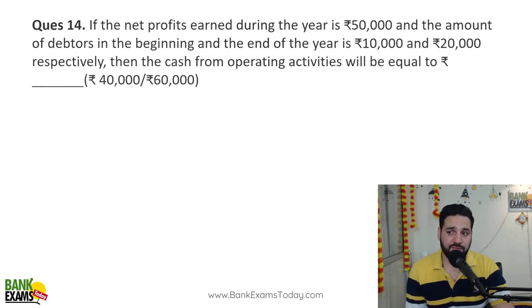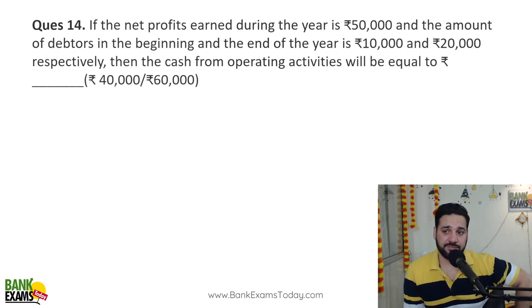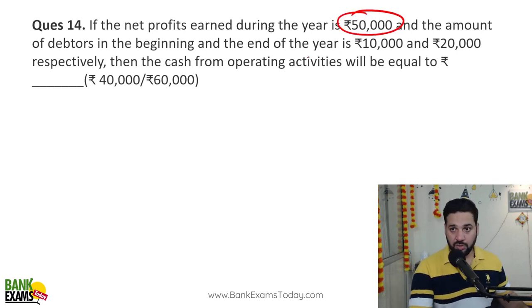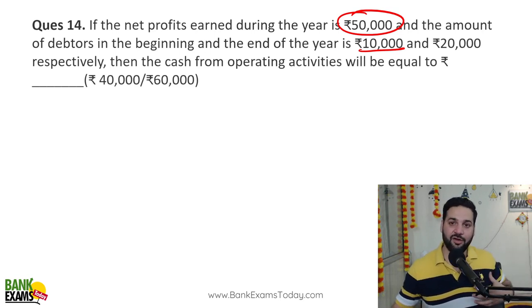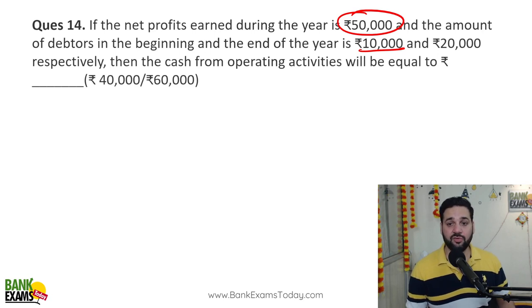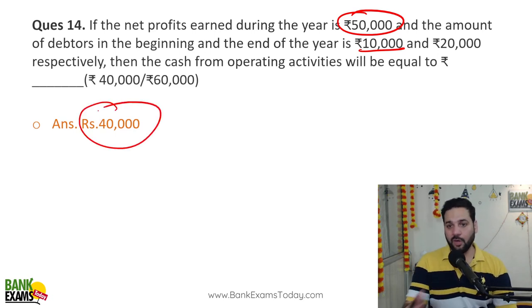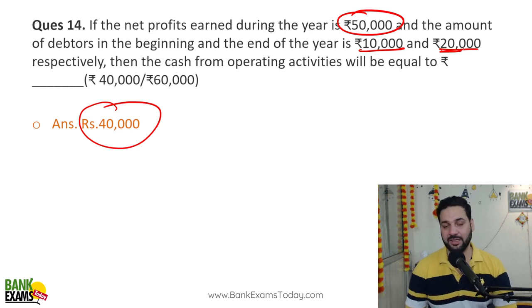If the profits earned during the year are 50,000, the amount of debtors at the beginning of the year is 10,000, and at the end it is 20,000 — how much cash have you received? Net profit is 50,000, but in the beginning 10,000 was pending from debtors and at the end 20,000 is pending. So an additional 10,000 is still with the debtors in the market. Therefore, 40,000 is the cash actually received from the market in the whole year.